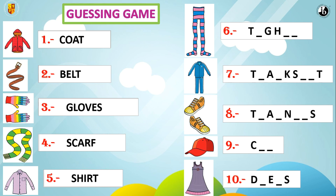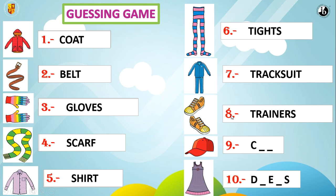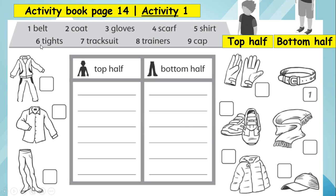Number five is a shirt. Good job. Number six — tights. Number seven is a tracksuit. Number eight — these are trainers. And number ten — this is a dress. Good job, excellent job! These are the items that we will be seeing today.